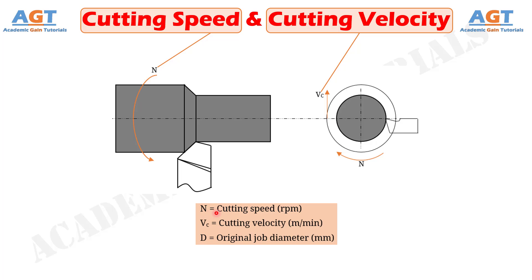On the other hand, cutting velocity is the tangential velocity of either the rotating workpiece or rotating cutting tool. Cutting velocity is usually measured in meters per minute and designated by VC.